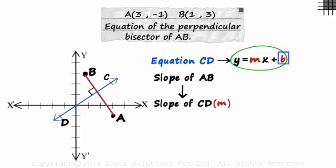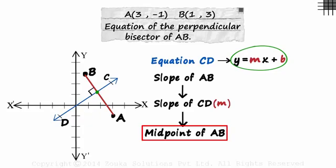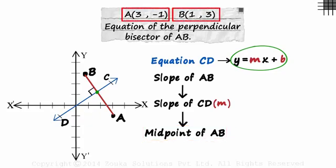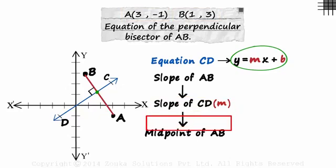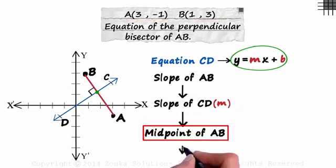The only point at which we can find the coordinates is this one, the intersection of AB and CD. Because it is also a midpoint of AB. And we can easily find the midpoint of AB as we have the coordinates of its endpoints. So after we get the slope of CD, we find the midpoint of AB, which will also give us B.